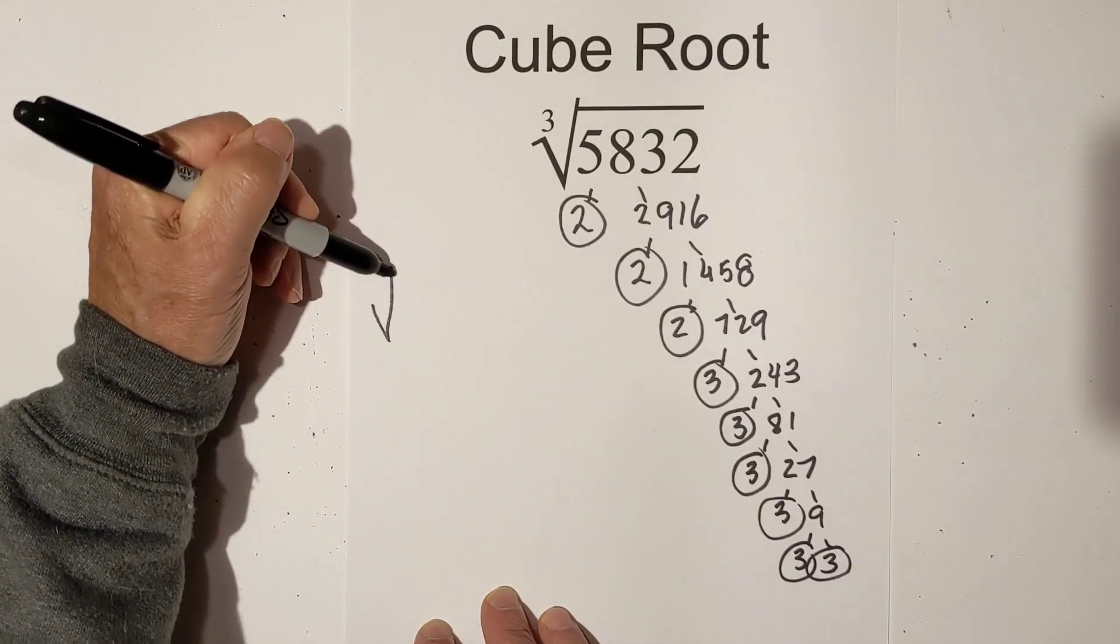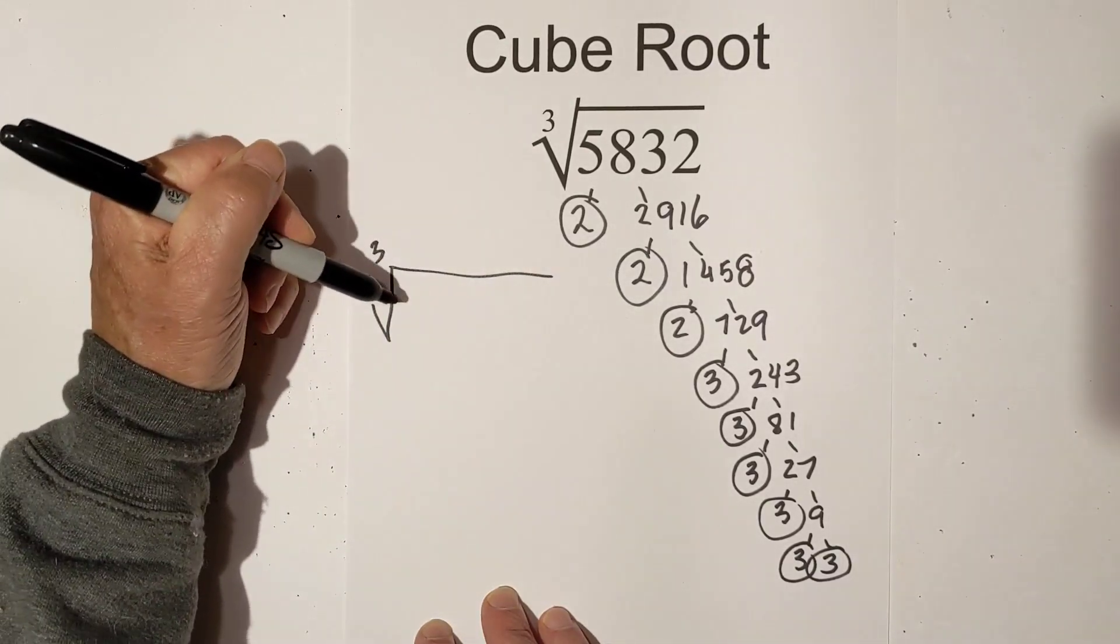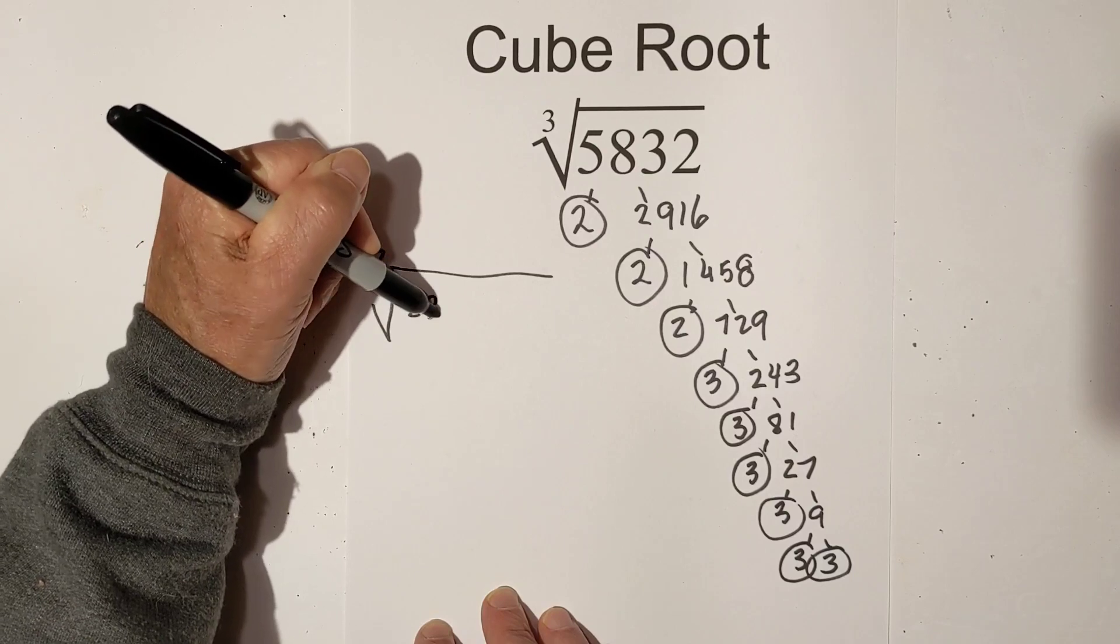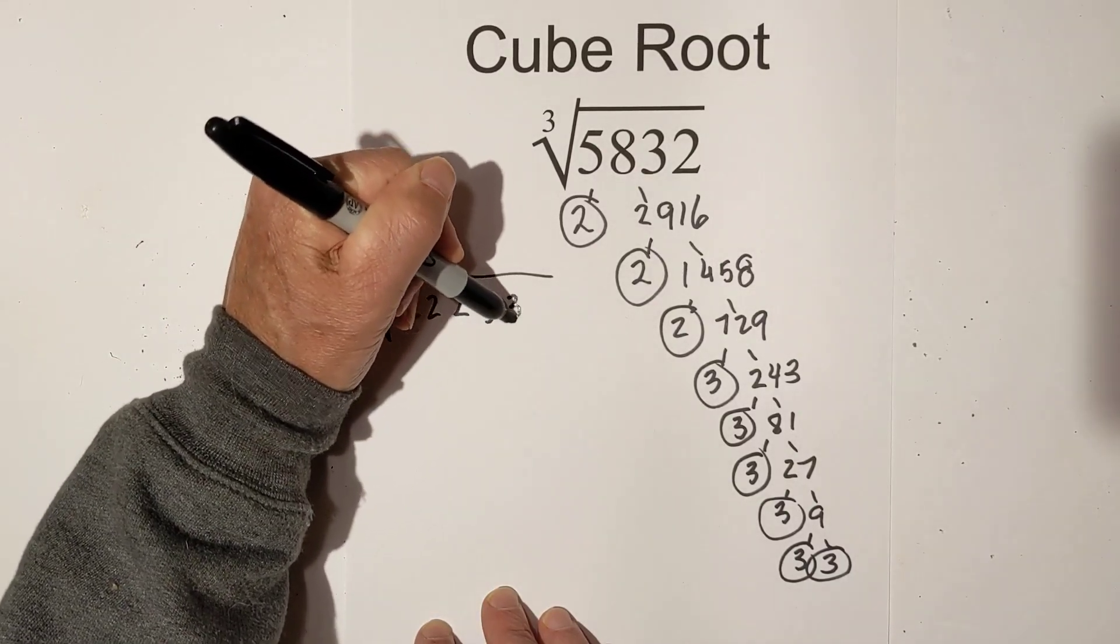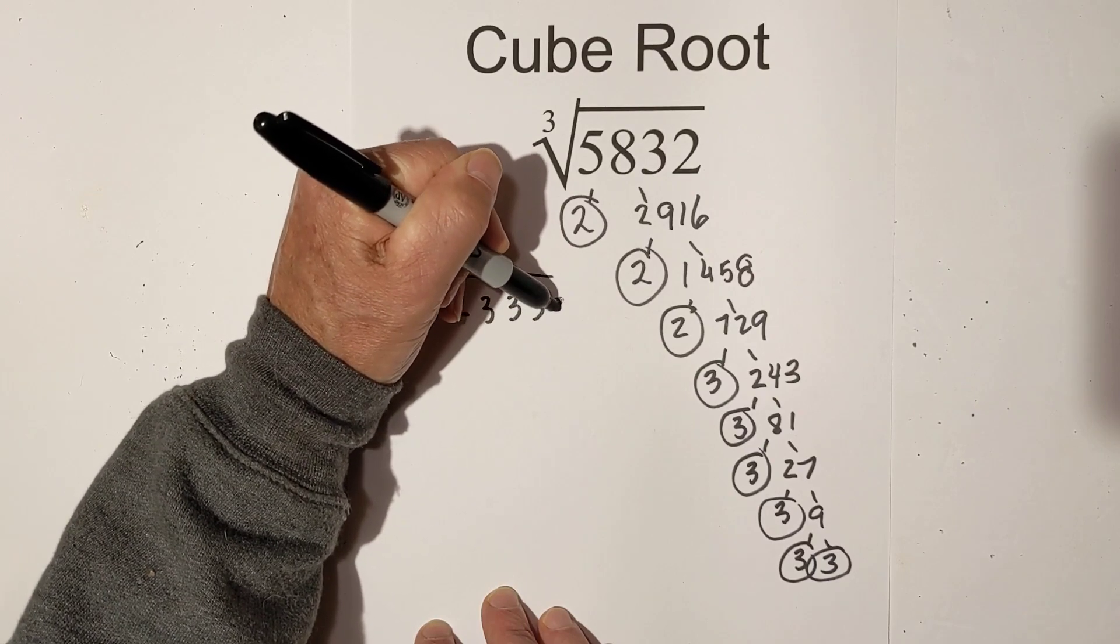Now we can place them under the cube root sign. So we have a 2, 2, 2, then we have a 3, 3, 3, and then 3 more 3's.